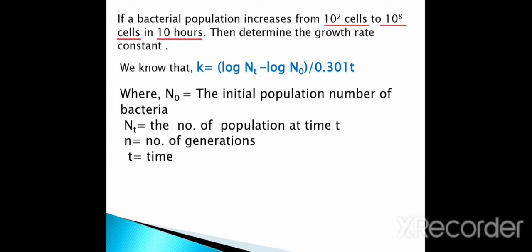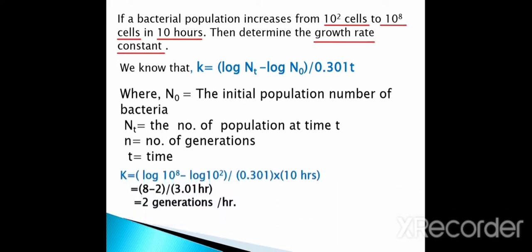Here N0 = 10^2 cells and the final population at 10 hours is 10^8 cells. So k = (log 10^8 − log 10^2) / (0.301 × 10) = (8 − 2) / 3.01 = 2 generations per hour. The growth rate constant of this bacterial population is 2 generations per hour.